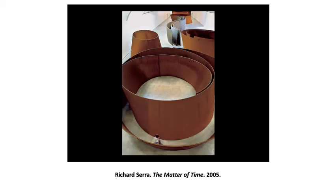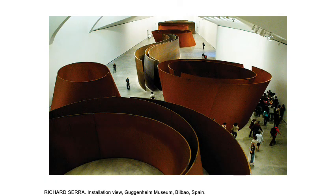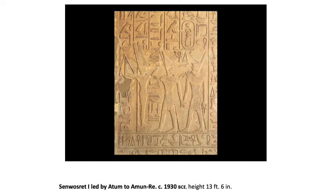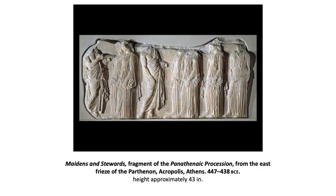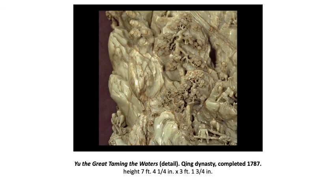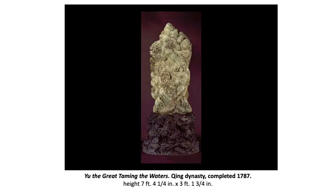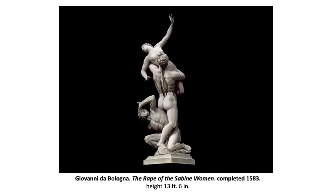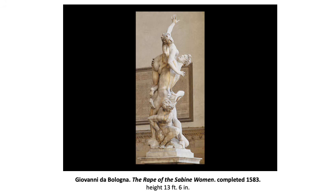Here's Richard Serra, and I can't even show you the scale of this. But he likes you to go in it and lose a sense of time and space. Here's an ancient Egyptian piece that is low relief, whereas this is more of a medium relief. Here is a seven-foot piece of jade carved. So these are reductive — giant pieces of stone carved.